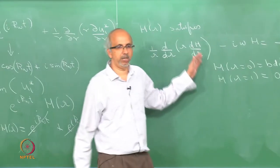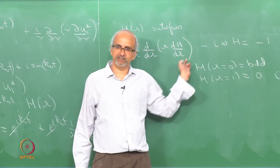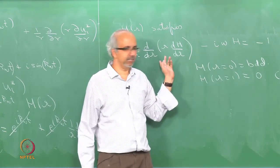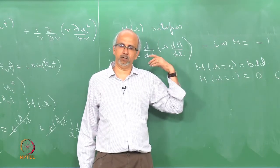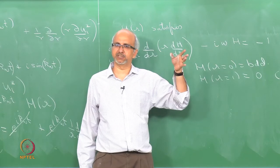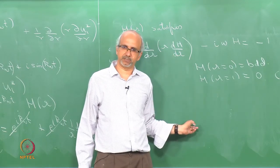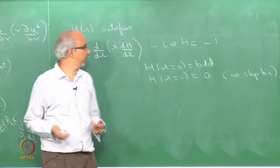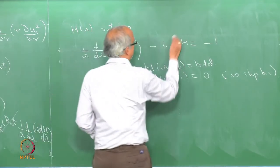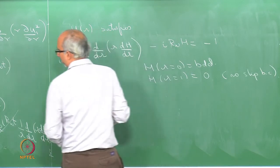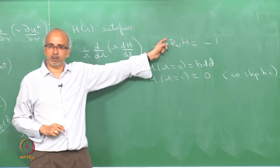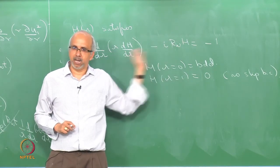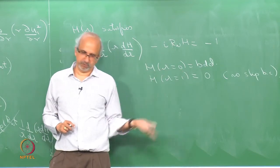This Bessel function equation gives a nice closed-form solution. Once I know h(r), I substitute back to get U₁*, take the imaginary part, and get U₁. Then, in the limit of R_ω small, I can do a perturbation series solution and compare with the exact solution. We will do that tomorrow.